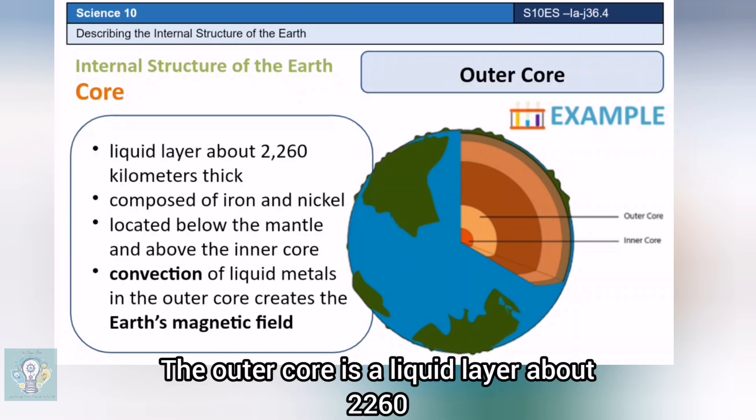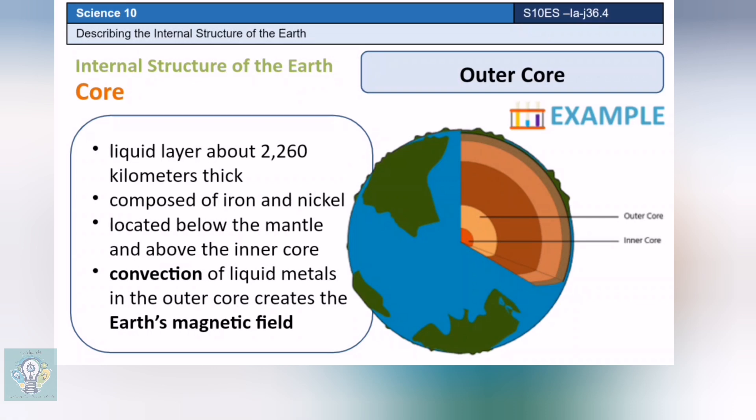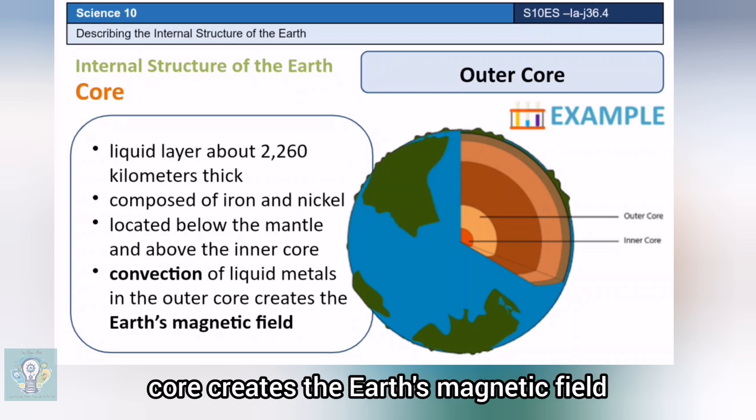The outer core is a liquid layer about 2,260 kilometers thick. It is located below the mantle and above the inner core. It is composed of iron and nickel. Convection of liquid metals in the outer core creates the Earth's magnetic field.